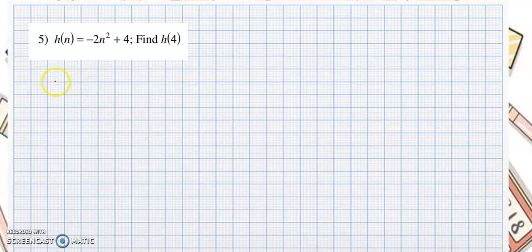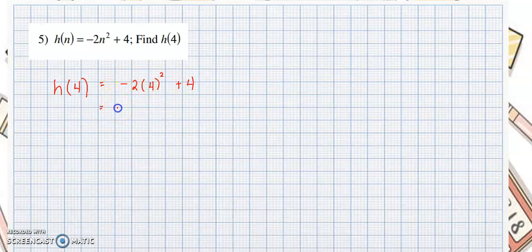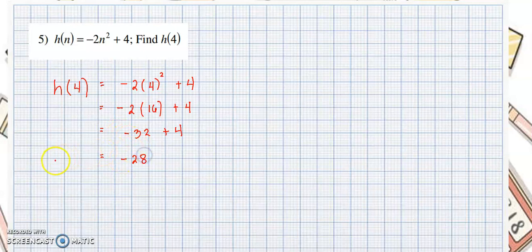Next: find h of 4, substituting 4 on all values of n. This gives negative 2 times 4 squared plus 4. We evaluate the exponent first: 4 squared is 16. So negative 2 times 16 plus 4 equals negative 32 plus 4, which equals negative 28. Therefore h of 4 equals negative 28.